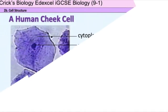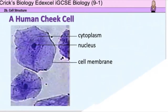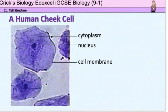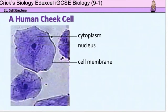This is a photograph of how my own cheek cells looked when observing them down a light microscope at a magnification of times 400. You can clearly see the cell membrane, cytoplasm, and the nucleus, but the mitochondria and ribosomes cannot be distinguished.